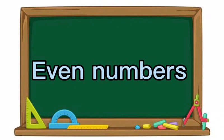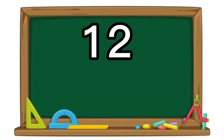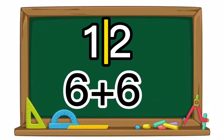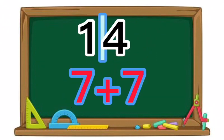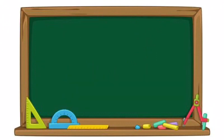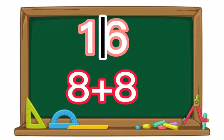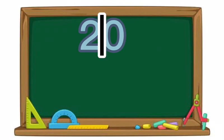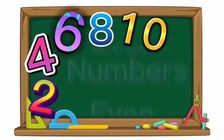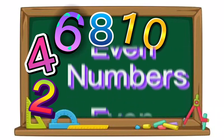Even numbers: twelve is an even number because it splits equally in half. Fourteen splits equally in half. Sixteen splits equally in half. Eighteen splits equally in half. Twenty also splits equally in half. These are even numbers.